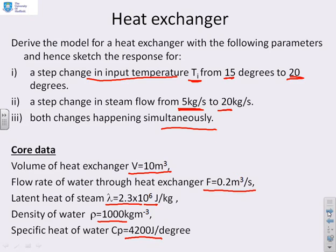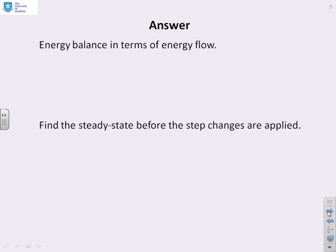Here we go then with the answer. The first thing to do, which has been discussed before, is to do an energy balance. And we're doing it in terms of energy flow or joules per second. First of all, the rate of change of energy stored in the tank is the density times the volume. So that's the mass of the water in the tank. We've got the specific heat of the water in the tank. And then we've got the rate of change of temperature with time. So that tells us what's the rate of change of energy stored in the tank or heat energy.